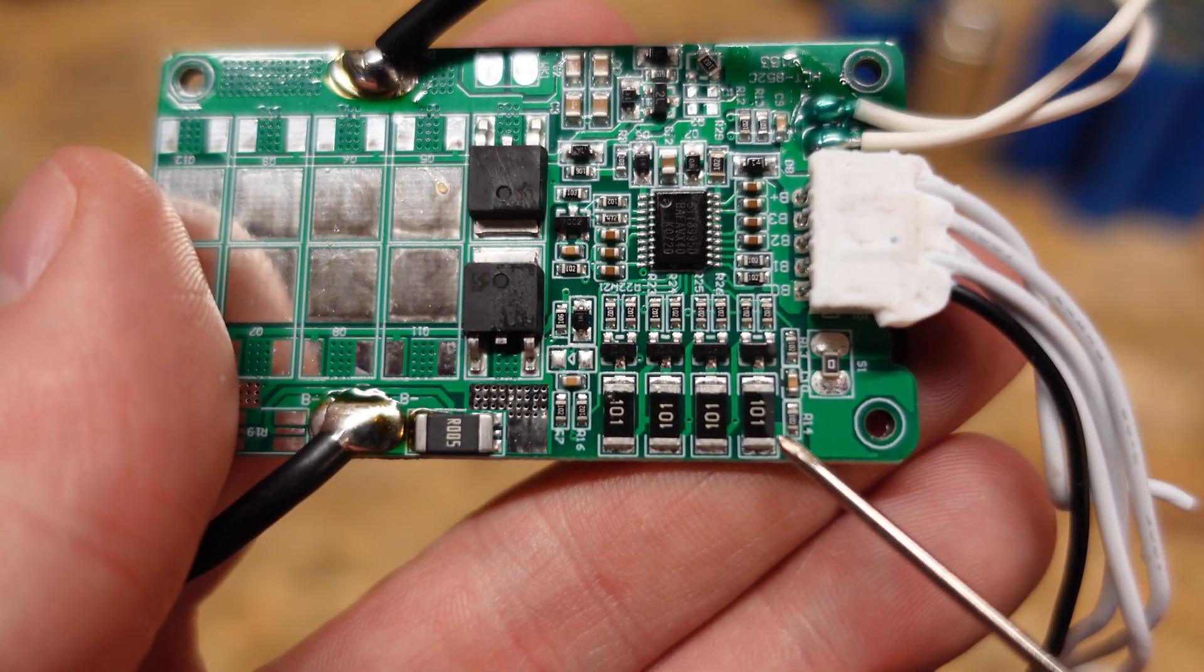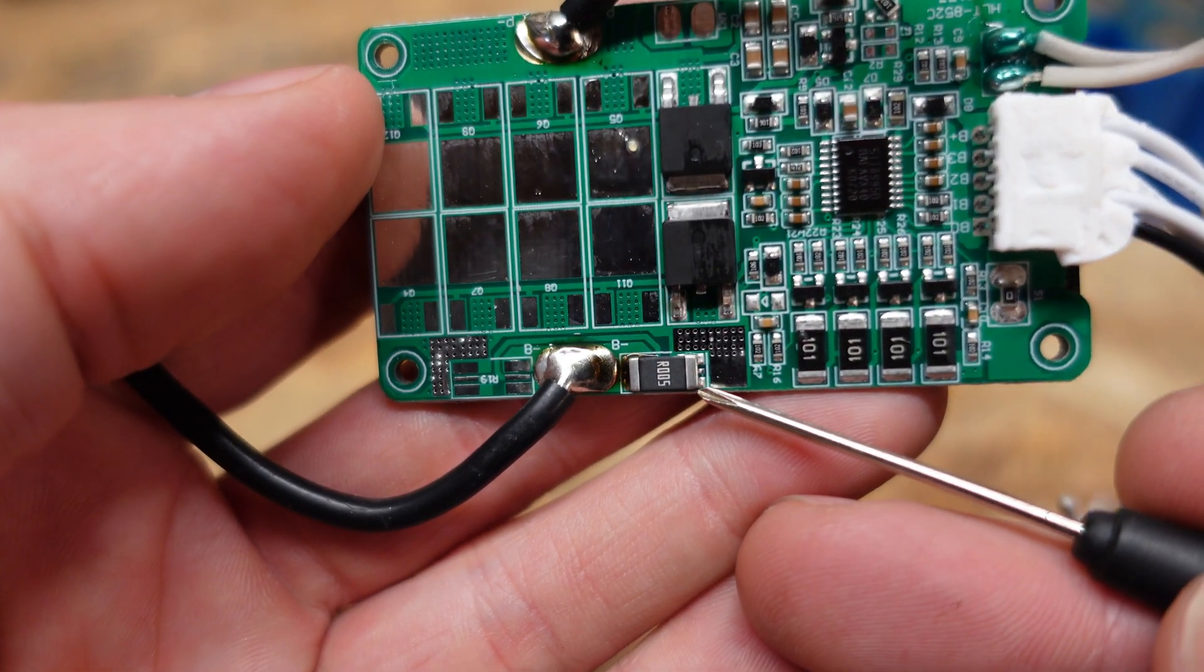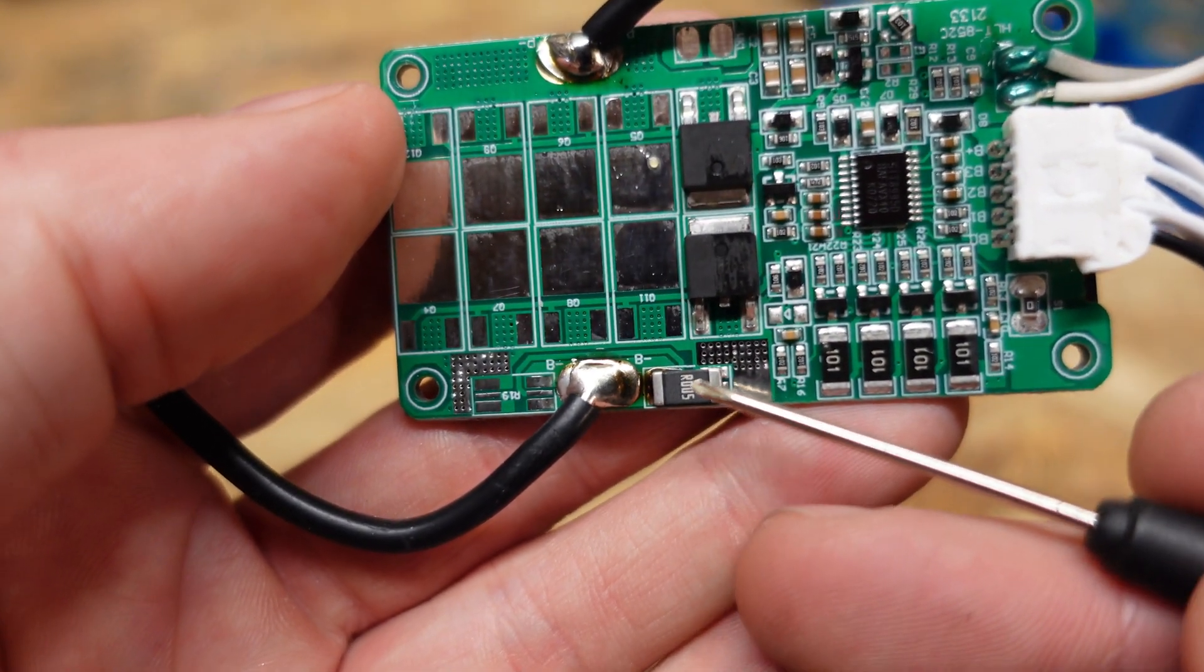So if it senses one of these cells is over voltage and needs to balance one of these transistors will flip on and pass current to this resistor that will bleed it off as heat. We do have a large resistor here that's going to be a shunt resistor for measuring the current.